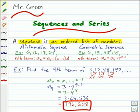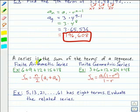Let's move on and talk about series. A series is the sum of the terms of a sequence. You could have a finite arithmetic series or a finite geometric series. And here are formulas to find the sum of each type.